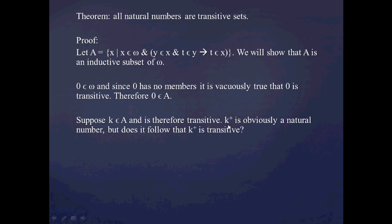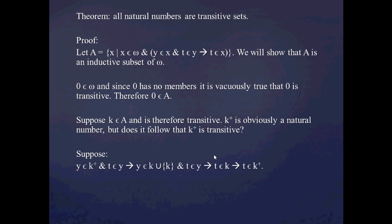So we're going to show the inference: if K is in A, then K+ is also in A. We're going to have to show that K+ is both a natural number and that K+ is transitive. The first part — that K+ is a natural number — is pretty obvious. The more interesting part is to show that K+ is transitive if K is transitive.